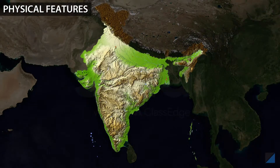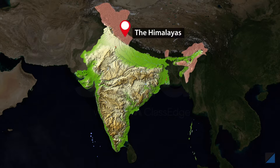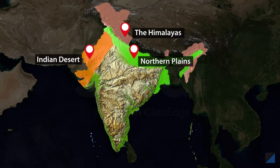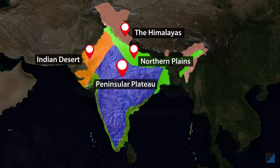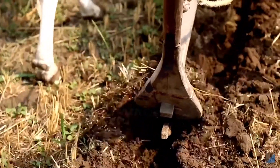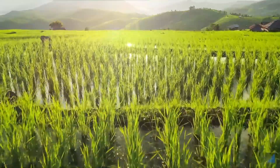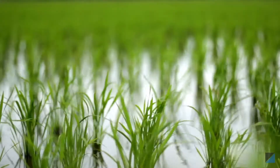One plausible explanation is India's diverse physical features. This single country has snow-clad mountains, vast inland plains, a hot desert, a peninsular plateau, coastal plains, and islands. The soil type, rainfall distribution, and terrain in each area influence the variety of crops grown there and the local cuisine.